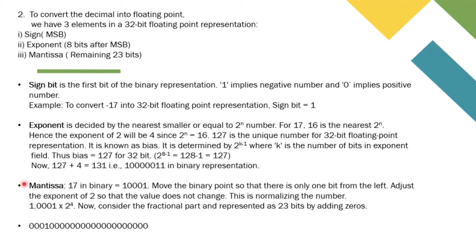For the mantissa, 17 in binary is written as 10001. Move the binary point so that there is only 1 bit to the left, adjusting the exponent of 2 so the value does not change — this is normalizing the number, giving 1.0001 × 2^4. Consider the fractional part and represent it as 23 bits by adding zeros.